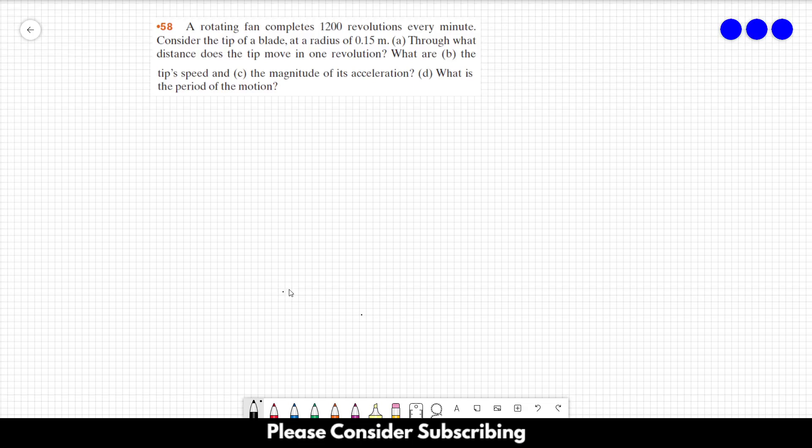Number 58: A rotating fan completes 1200 revolutions every minute. Consider the tip of a blade at a radius of 0.15 meters. Letter a: Through what distance does the tip move in one revolution? Letter b: What are the tip's speed and letter c: the magnitude of its acceleration? Letter d: What is the period of the motion?